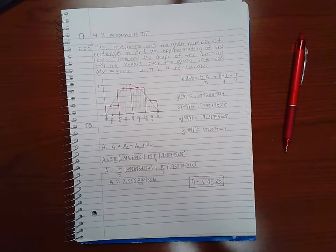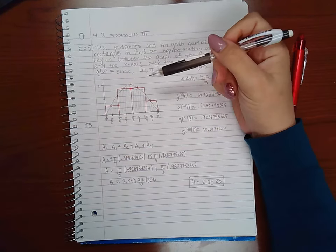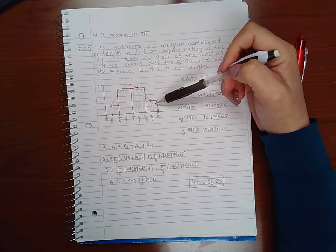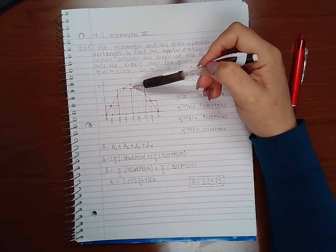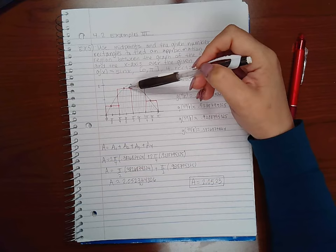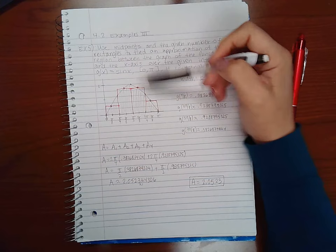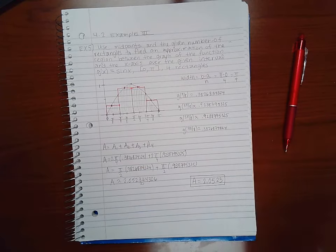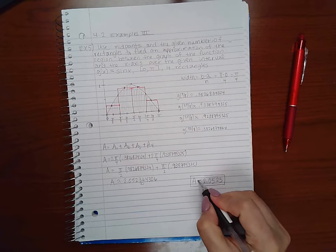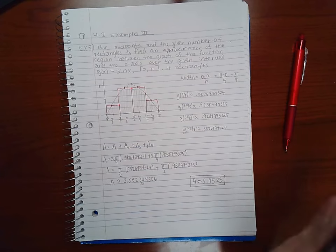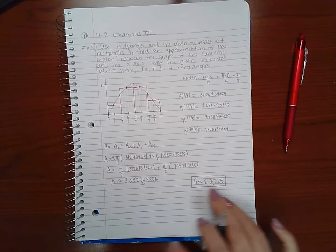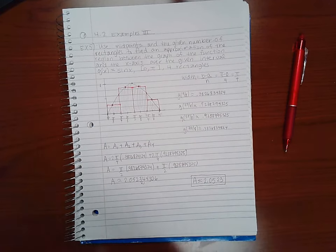Now we're not sure exactly if it's an overestimate or an underestimate because notice that here it's under the graph a little bit but also over the graph a little bit. So in the same thing here it's under and over, under and over. So we don't know exactly that this is an upper sum or lower sum. All we know is that it's an estimate. The actual area will be somewhere close to this value.